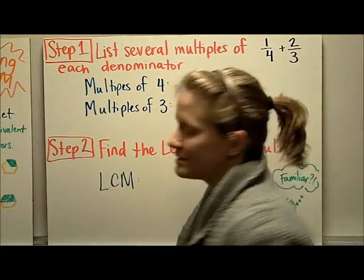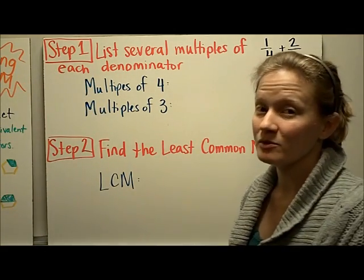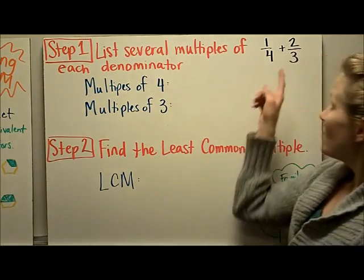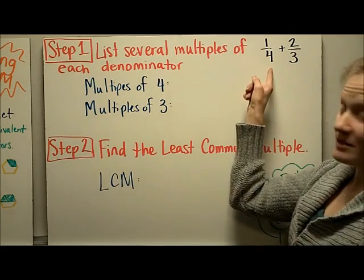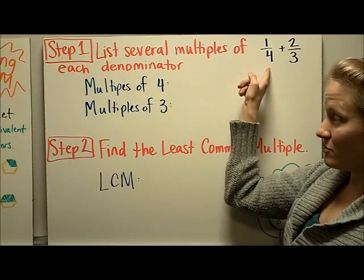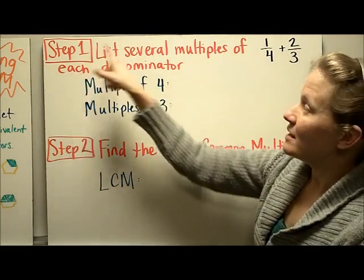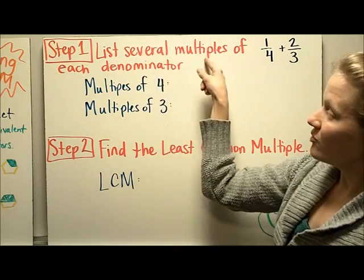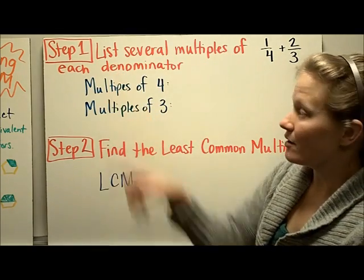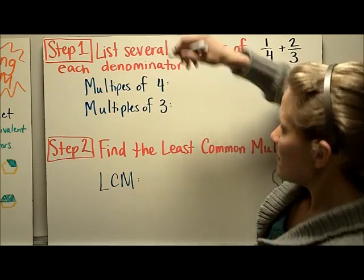So let's go through the steps of using the least common multiple in order to add fractions, starting with this problem: one-fourth plus two-thirds. The first step is to list several multiples of each denominator. So I'm going to list the multiples of four.